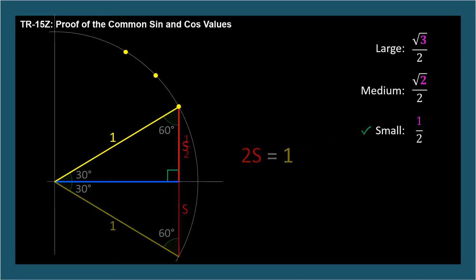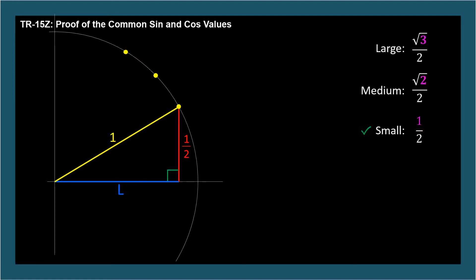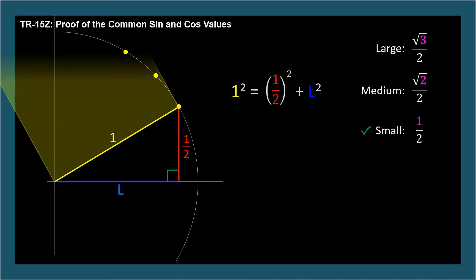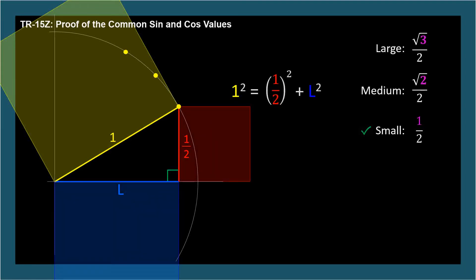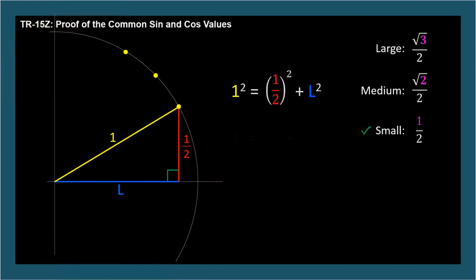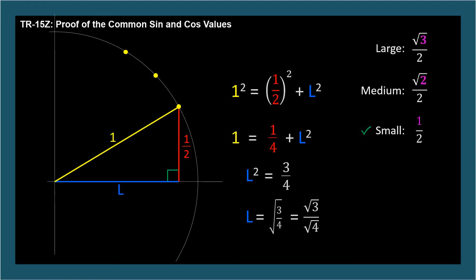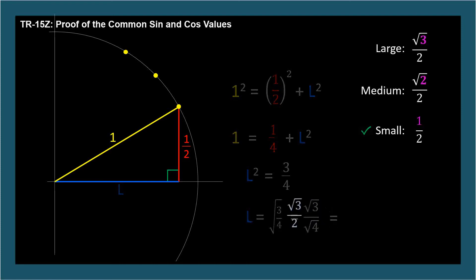Now let's find the large number, whose distance is the length of the blue line. I'll label it l for large. We just need the Pythagorean theorem. We have a right triangle and we know two of its sides. 1 squared equals 1 half squared plus l squared. This is quite literally the area of yellow equals area of red plus area of blue. So we can simplify the equation and isolate l squared, which equals 3 fourths. Take the square root of both sides, and l equals square root of 3 fourths. Distribute the radical to numerator and denominator and simplify the denominator to get square root of 3 over 2, which is the large number.